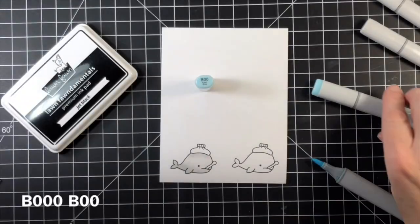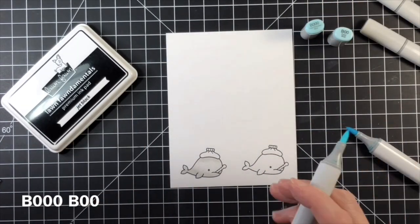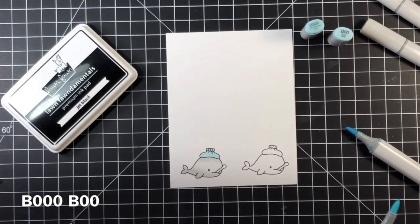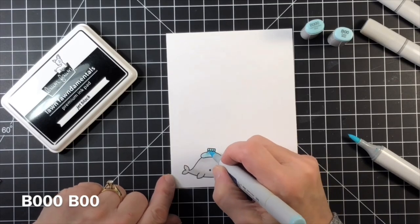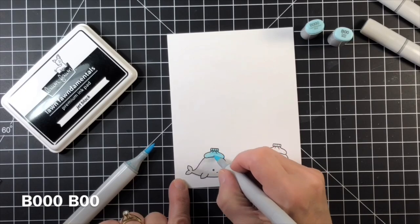So now I'm just going to go back in and add a bit more shading and add a little bit more depth to the image where I think it needs it, and then at the end I'm going to take my base color, so my T0 for the whale and my B000 for the ice pack, and just go over the image one more time just to blend it out.